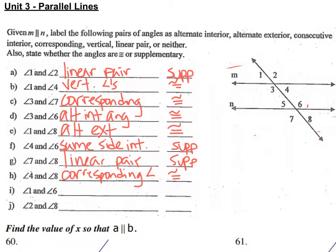Angle 1 and angle 6 don't really have any sort of special relationship. They're on alternate sides, but they're not both interior, they're not both exterior, so we're just going to say none.